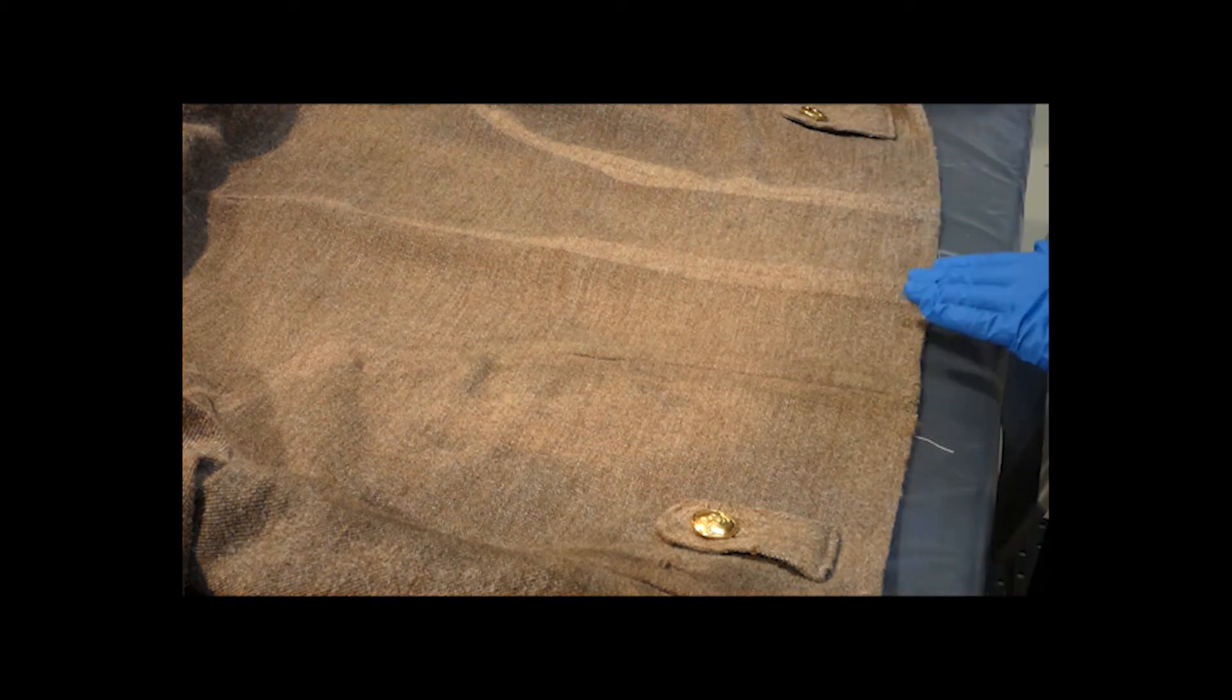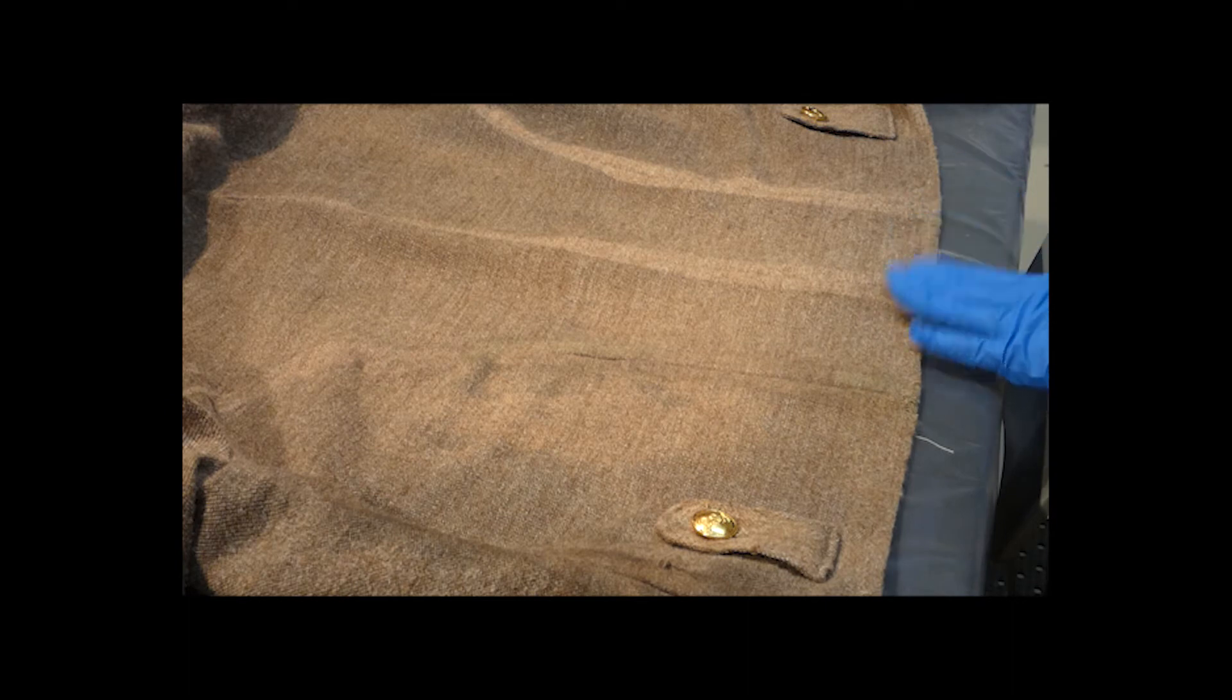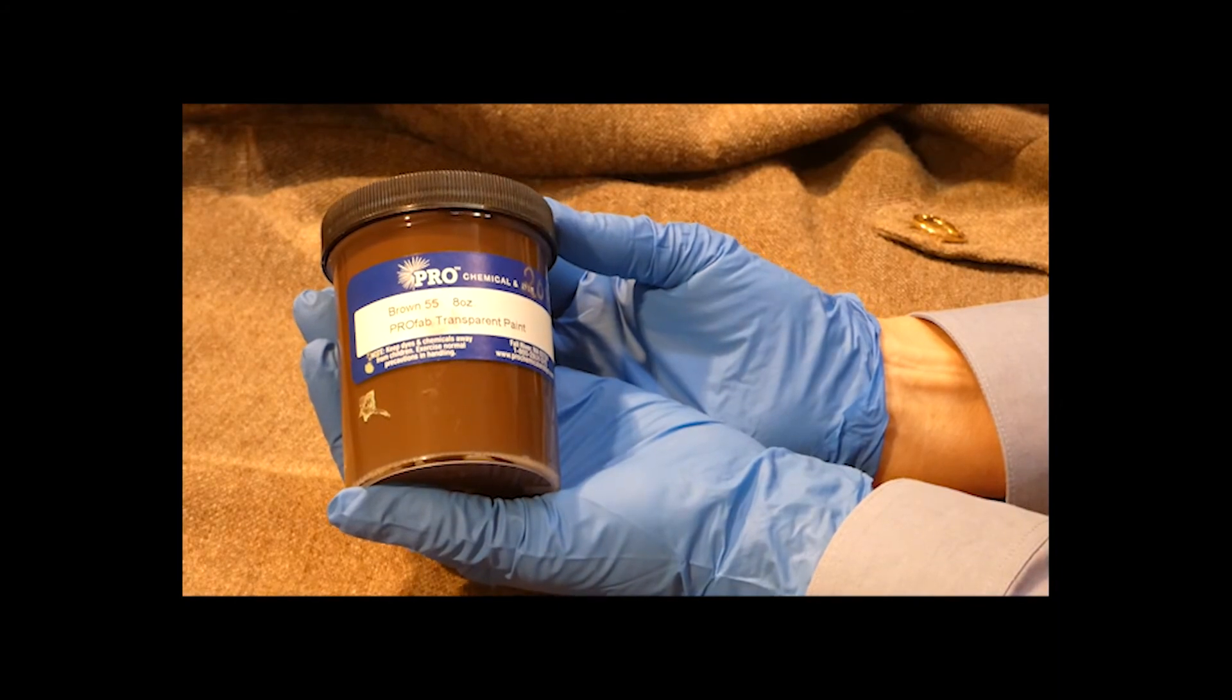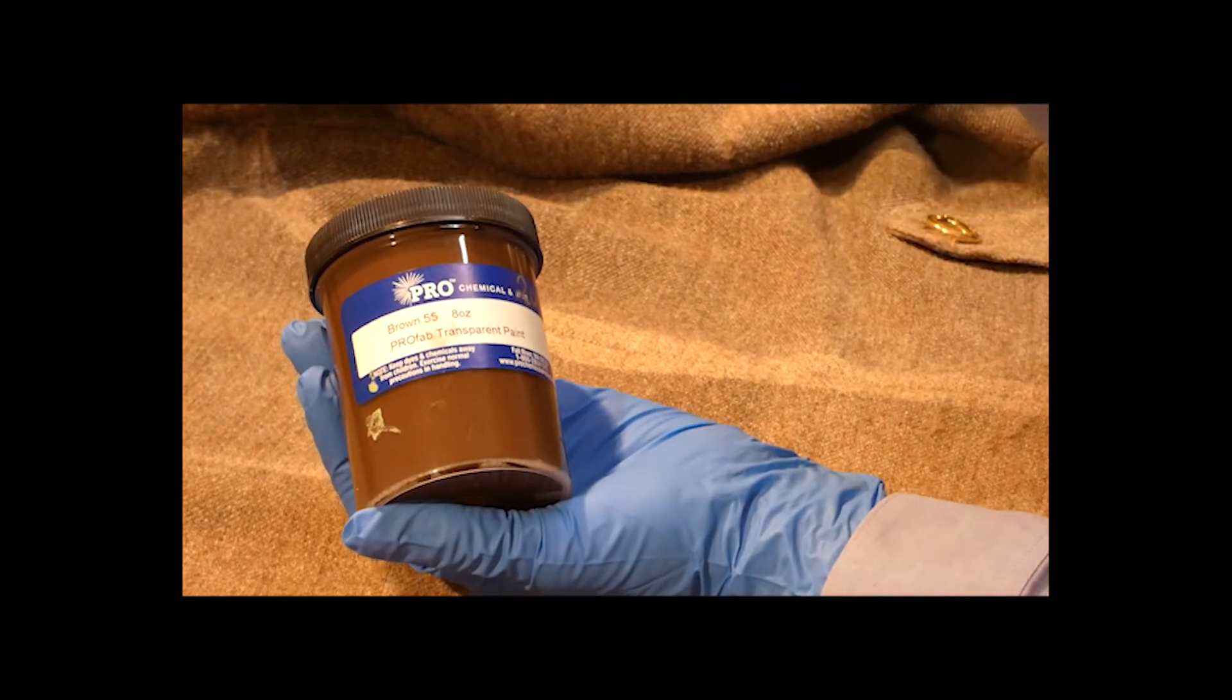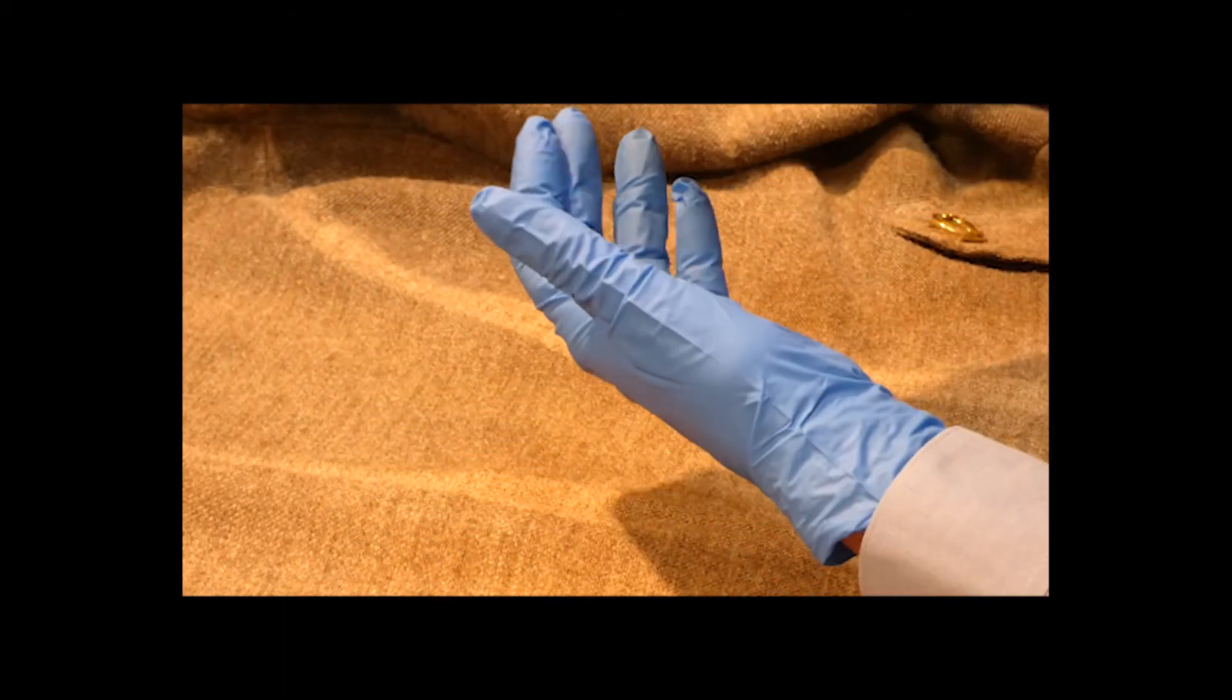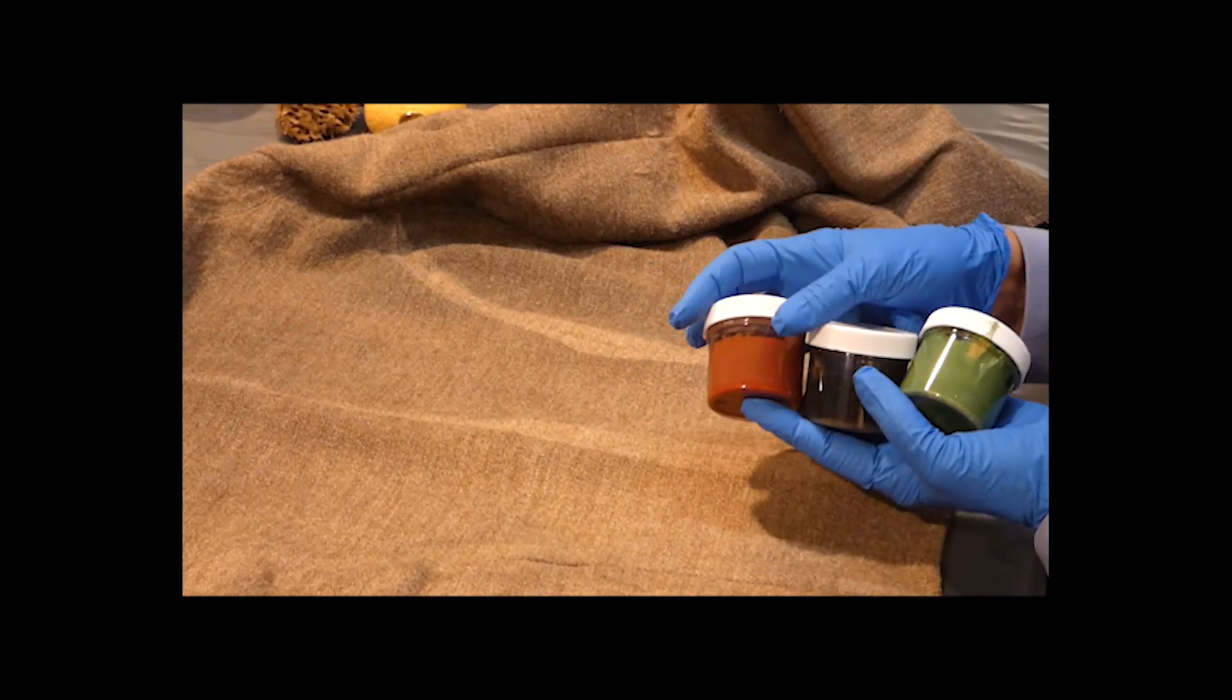The original paint that was used for the distressing on these jackets, that was five years ago. That product is now a little bit old in terms of shelf life. So I have chosen to use a different product for this work today. This is a pro-chemical and dye product. It comes in both a transparent paint and an opaque paint. In this case, I'm trying to work with a transparent because really the work that's being done here has a kind of a watercolor quality to it. So I don't want too much opacity to the paint. So this is a lovely product to work with. I've pre-mixed some colors that are very close to the colors that were used in the original project. Some reds, some greens, some grays, and browns.